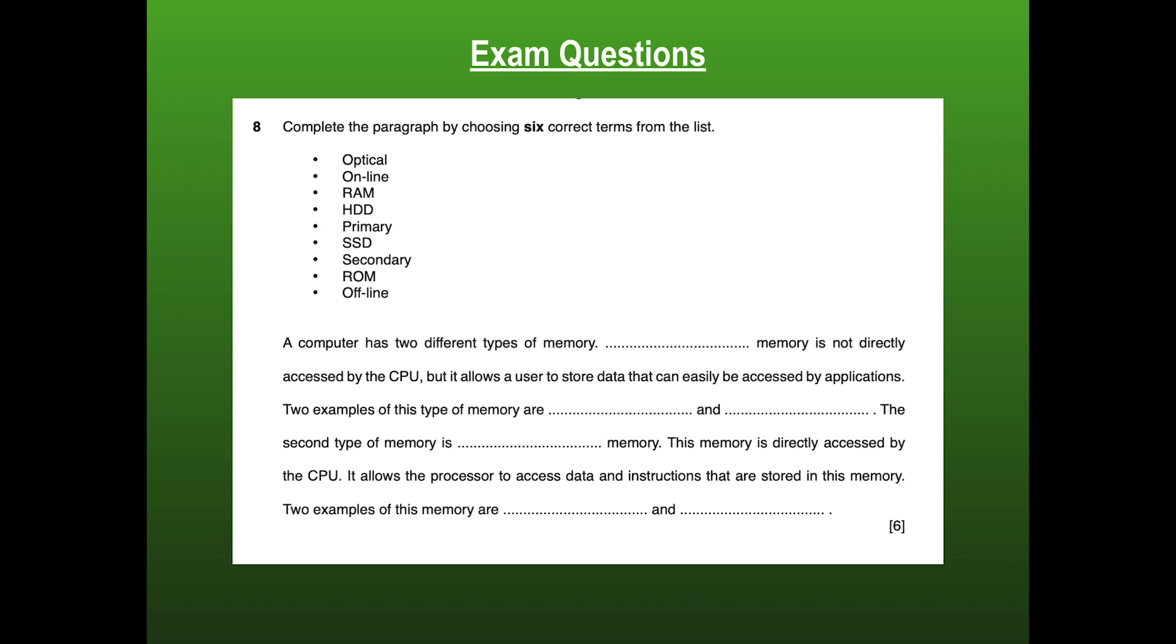Okay, here's a more complicated one. We need to now take these words and put them into the correct place within this paragraph of text. Now you may notice that there are nine different words and only six correct terms are required. So you might want to first of all, when you approach this exam question, just read through all of the different options that are available and get an idea of exactly which ones are likely to be used. So for example, here, the word online stands out to me as not relevant to this chapter. And so I would immediately disregard this.